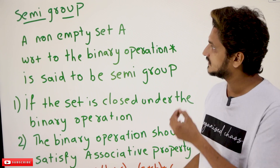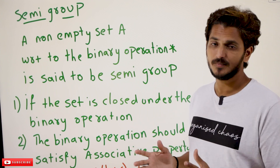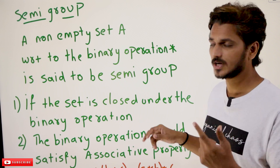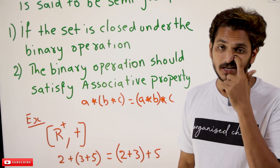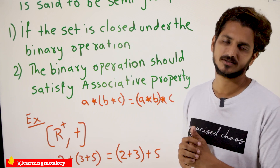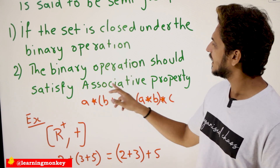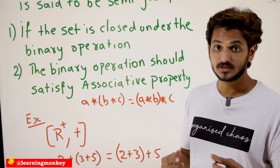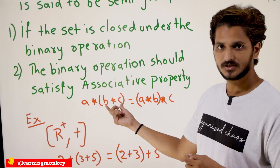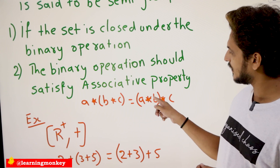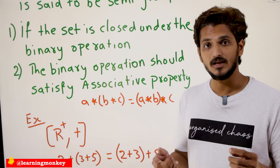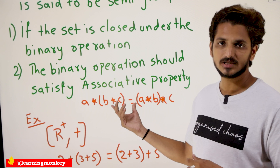Semigroup: take a non-empty set A with respect to a binary operation. It is said to be a semigroup if it satisfies two conditions. The first condition is the same as the algebraic structure condition — it has to be closed under the binary operation. The second condition is that the binary operation should satisfy the associative property. Associative property means: A star (B star C) equals (A star B) star C. If this holds for all A, B, C belonging to set A, then we say it is satisfying the associative property.